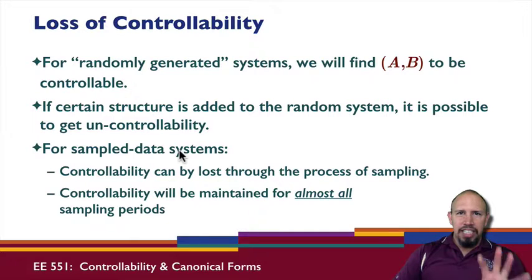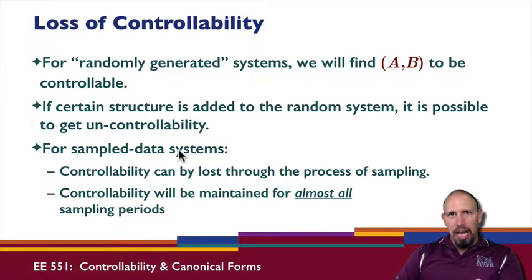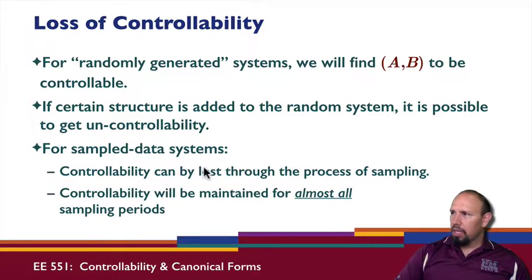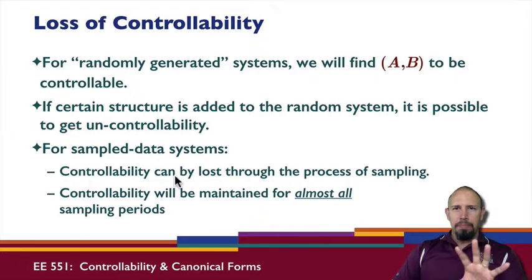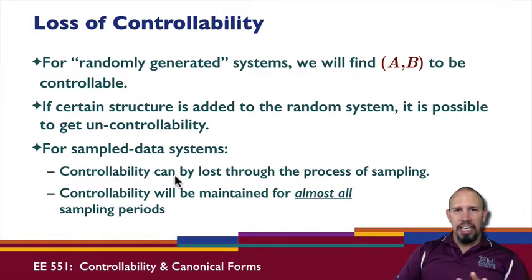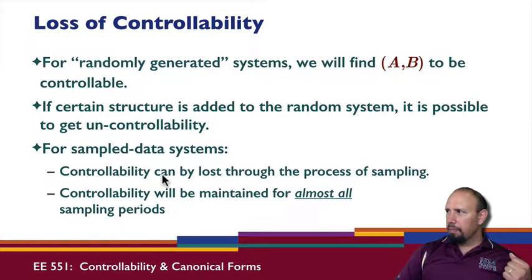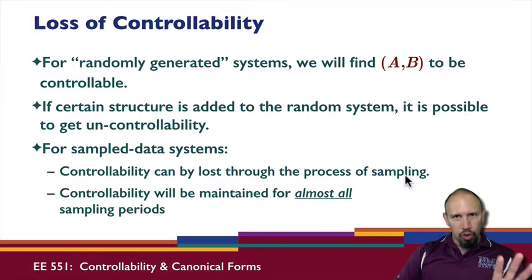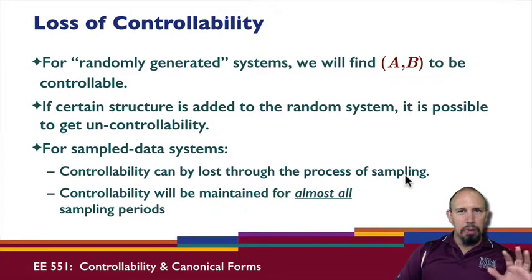We've seen that with a continuous time system, we can apply D to A and A to D converters to convert that into a discrete time system and get an equivalent discrete time system. From our A, B, C, D matrices, I can get some new system matrices in discrete time. You can show that controllability can be lost through the process of sampling. If your continuous time system is controllable, once you sample it, because remember in between samples you're throwing away whatever the system is doing, it's possible to get a system in which you do not have controllability.